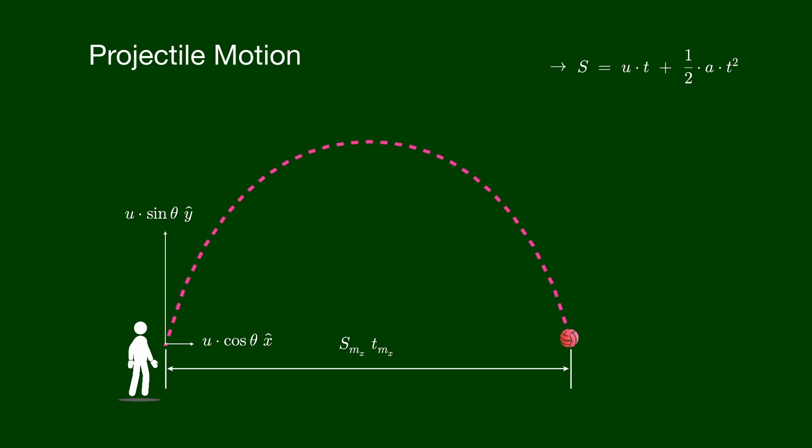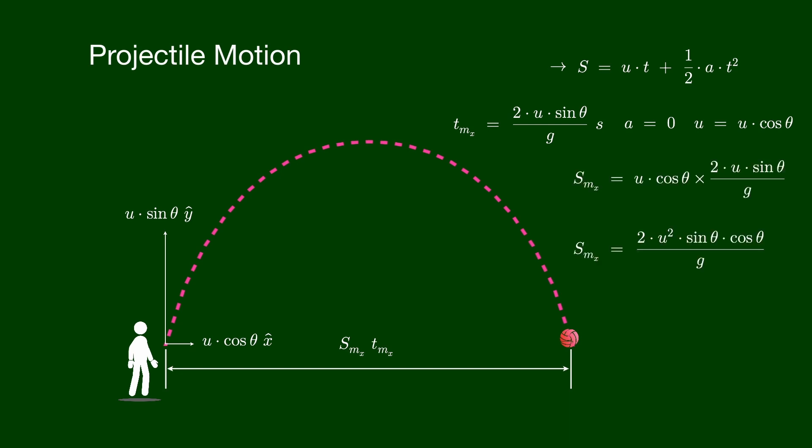We will use the same kinematic equation to determine the displacement in the x direction, keeping in mind that the acceleration in this direction is zero. Using these numbers along with the previously calculated time, we determine the displacement in the x direction and simplify the solution to obtain a formula for the range.